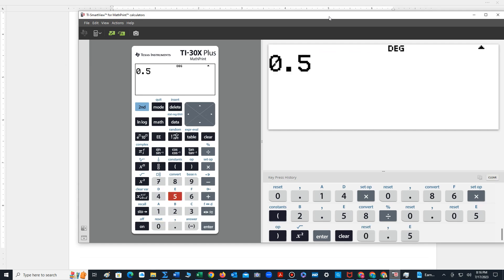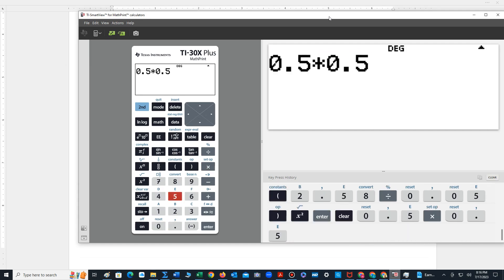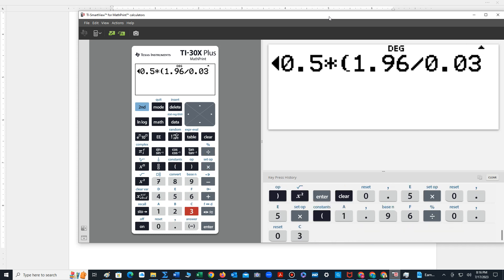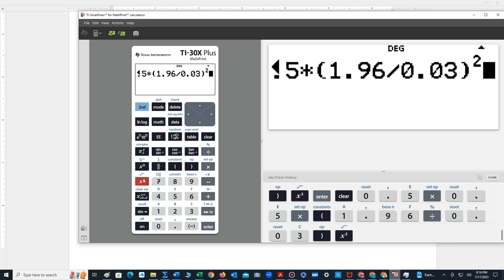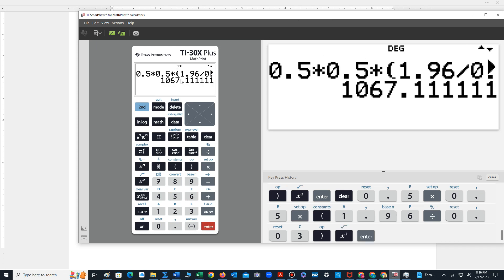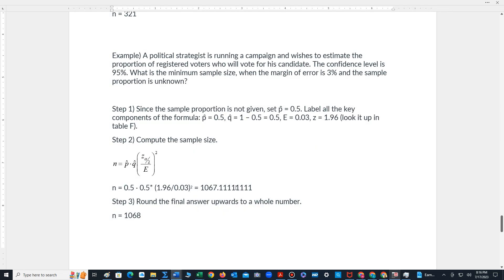So 0.5 times 0.5 times 1.96 divided by 0.03 and then we're squaring that. That's 1067.111, it just repeats. Remember we always round up to 1068.